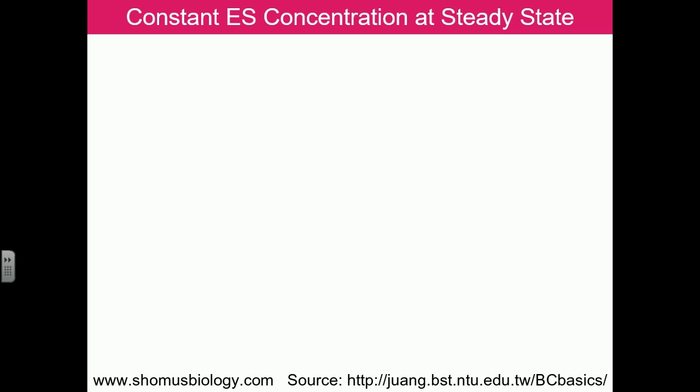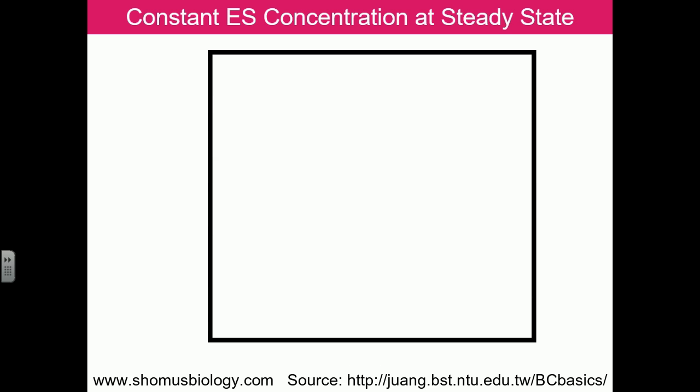We can prove the steady state through enzyme kinetics experiments. If we start with a fixed amount of substrate and a fixed concentration of enzyme and plot the data, we see that over time the substrate is utilized and product starts to form. In the graph, the x-axis shows reaction time and the y-axis shows the concentration of substrate, product, enzyme, and the enzyme-substrate complex.